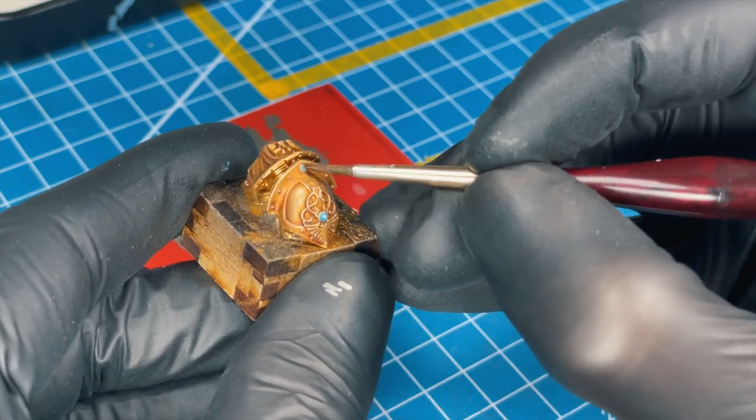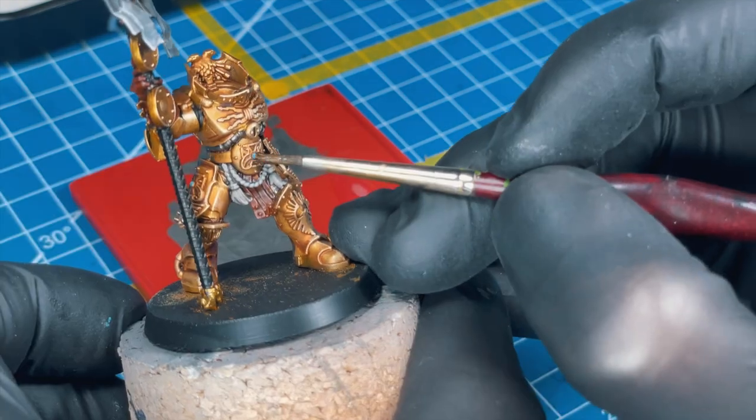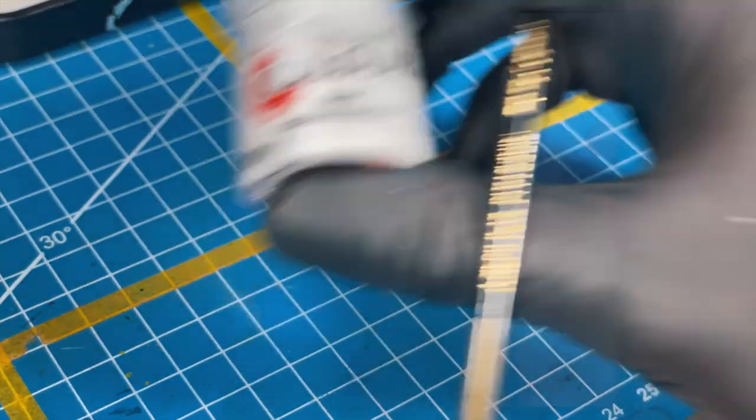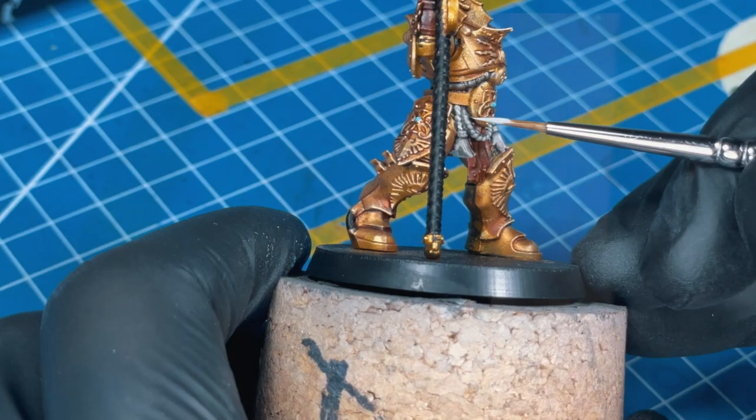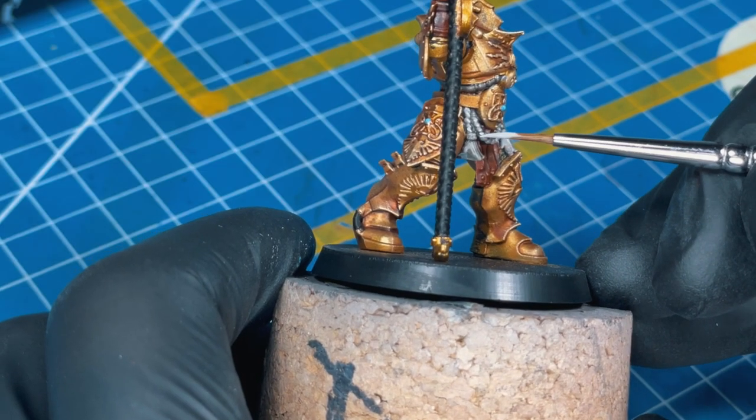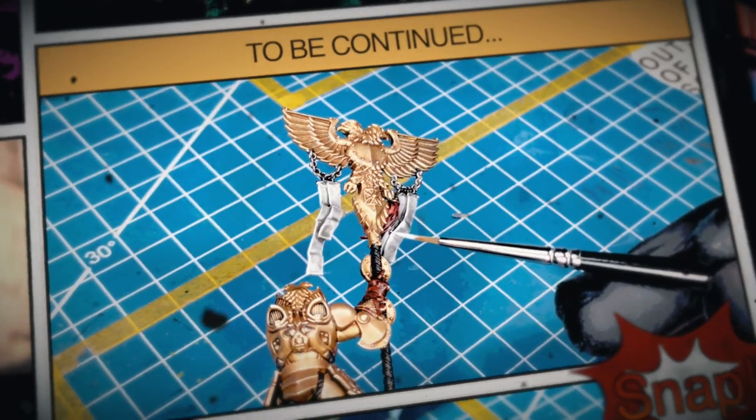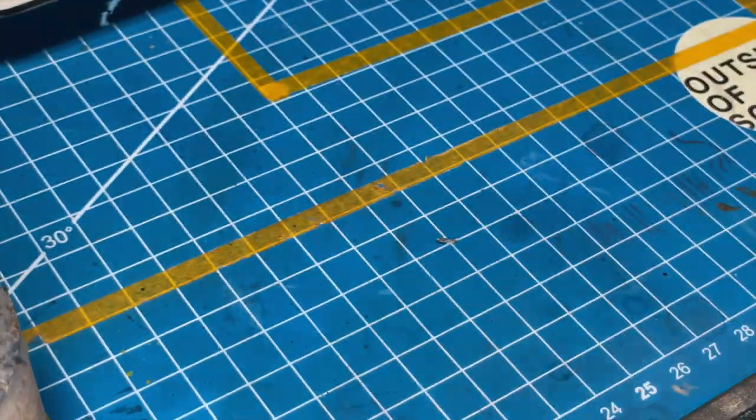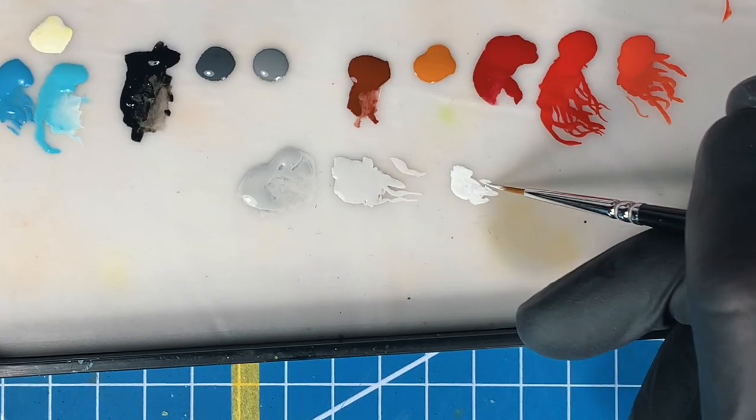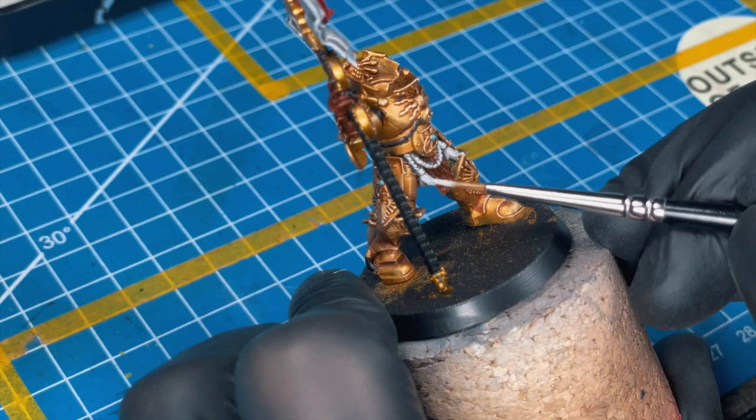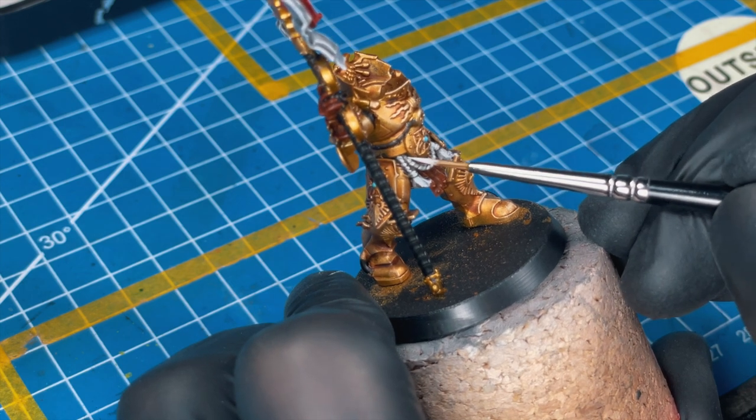Let's get back to our white. Let's paint the first highlight on the rope and on the parchment using the Corax White. It's the second highlight time, so grab your White Scar—it's an even brighter white—and paint only the small part of the previous highlight you painted.